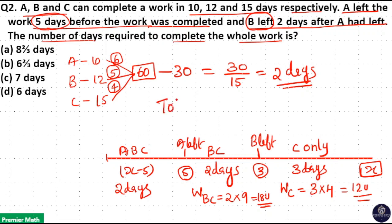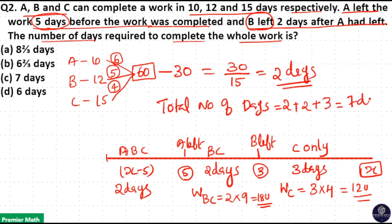Total number of days is 2 + 2 + 3 = 7 days. So option C is your answer. To summarize: A, B and C together worked for 2 days; B and C together worked for 2 days; C alone worked for 3 days. Total number of days is 2 + 2 + 3 = 7.